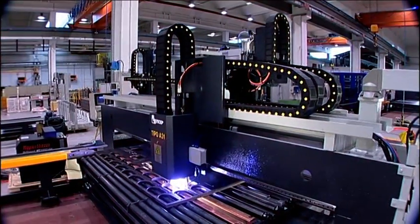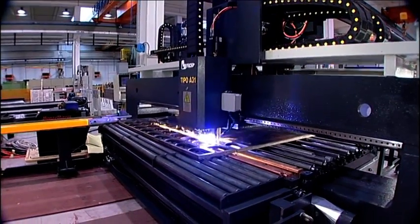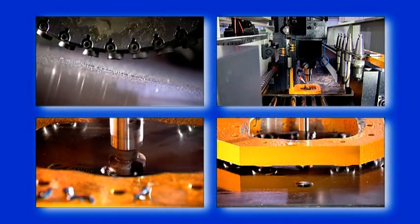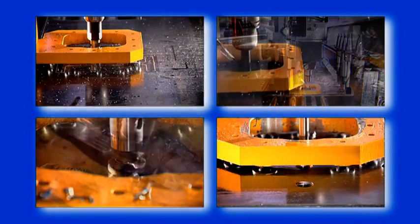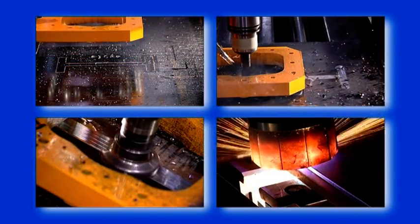The CNC line TIPO A31 is a working center that carries out the following operations in sequence: marking, drilling, milling, scribing, countersinking, tapping, chamfering, and thermal cutting.